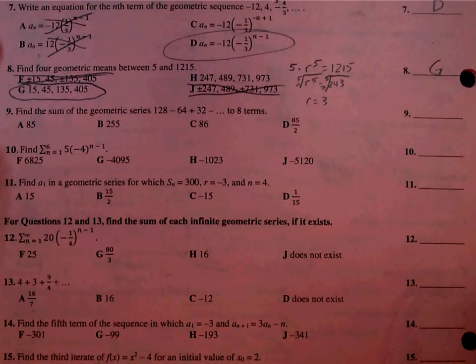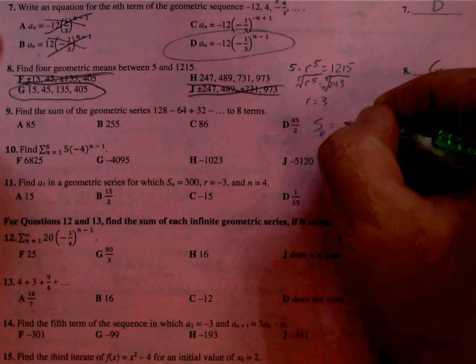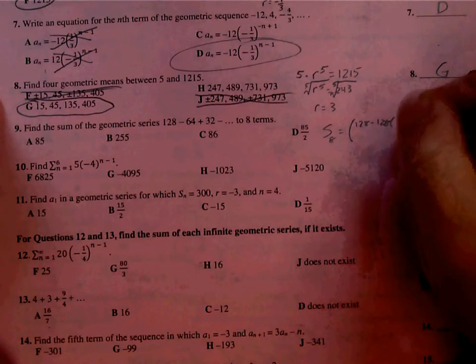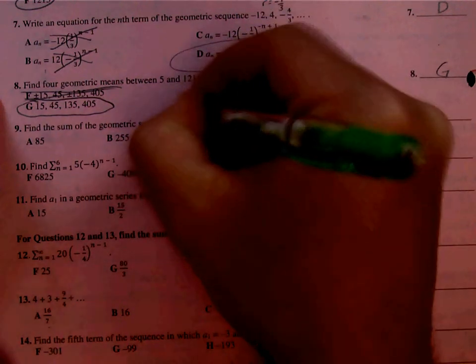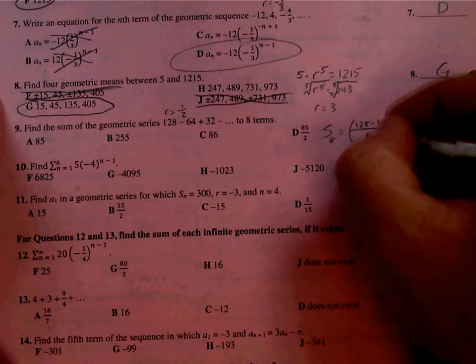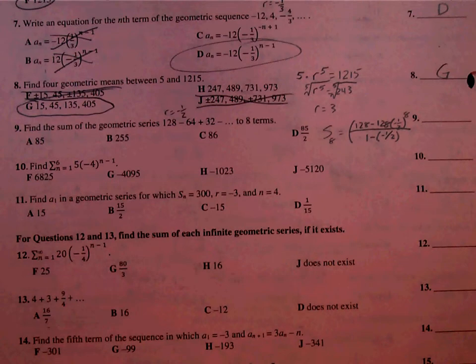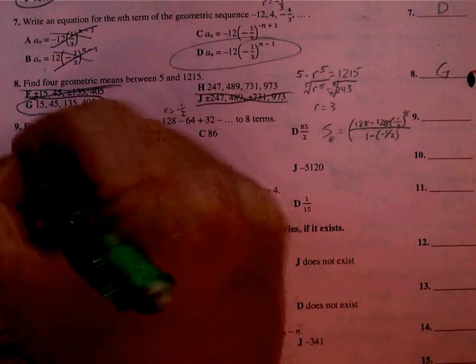Number 9, find the sum of this geometric series. 8 terms. So sum of these 8 terms. Let's take our first term, which is 128, minus first term times R. Looks like we're cutting it in half and it's alternating signs, so it's a negative 1 half to the power of 8. So 1 minus negative 1 half. And so we'll plug this into the calculator. And we get 85. So A.